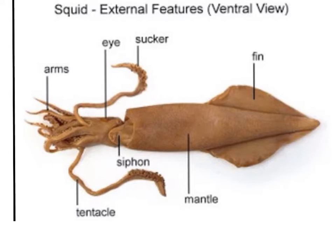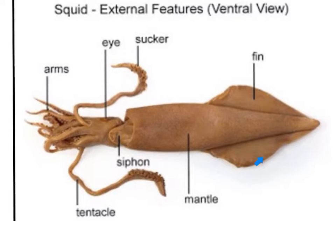Locomotion is achieved through jet propulsion, in which the siphon funnels water to push the body in motion. The siphon is a specialized foot with the ability to move and contract as needed. Locomotion can occur forwards or backwards, but in general the squid will move in a backwards motion. The fins act as stabilizers to orientate the body.